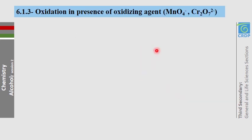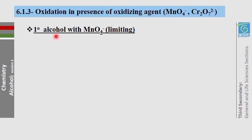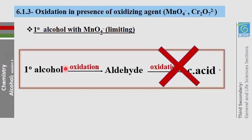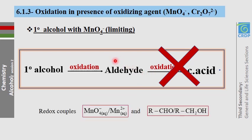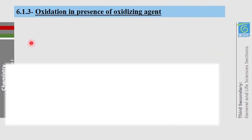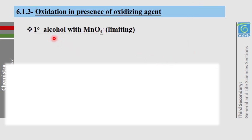The third reaction is oxidation in the presence of oxidizing agents. First case: if the oxidizing agent is in limiting amount, primary alcohol gives aldehyde, but because there is no more oxidizing agent, the aldehyde will not give carboxylic acid, so the reaction stops at aldehyde. The redox couples involved are MnO₄⁻ reduced to Mn²⁺, and primary alcohol oxidized to aldehyde.